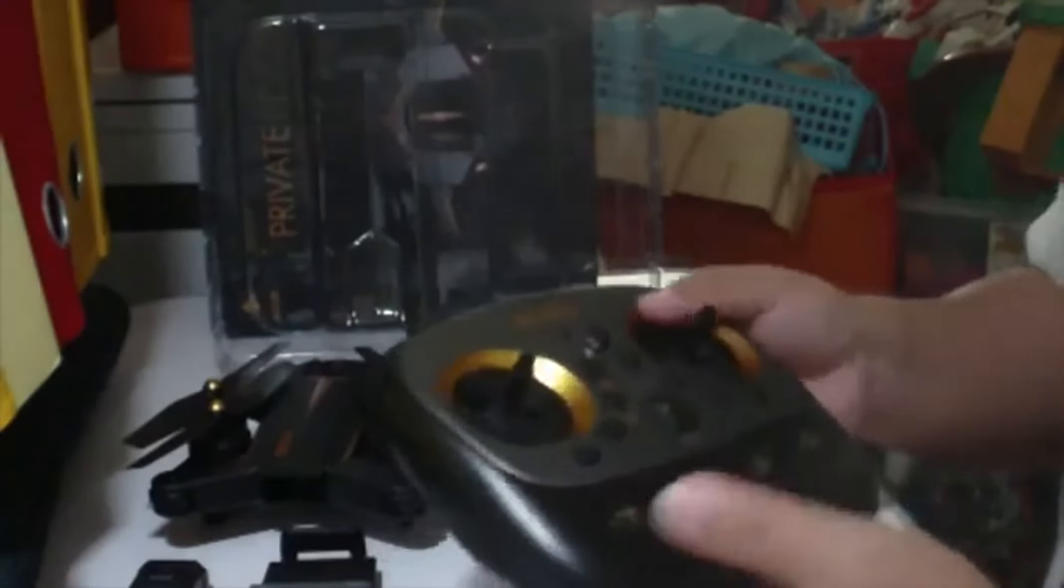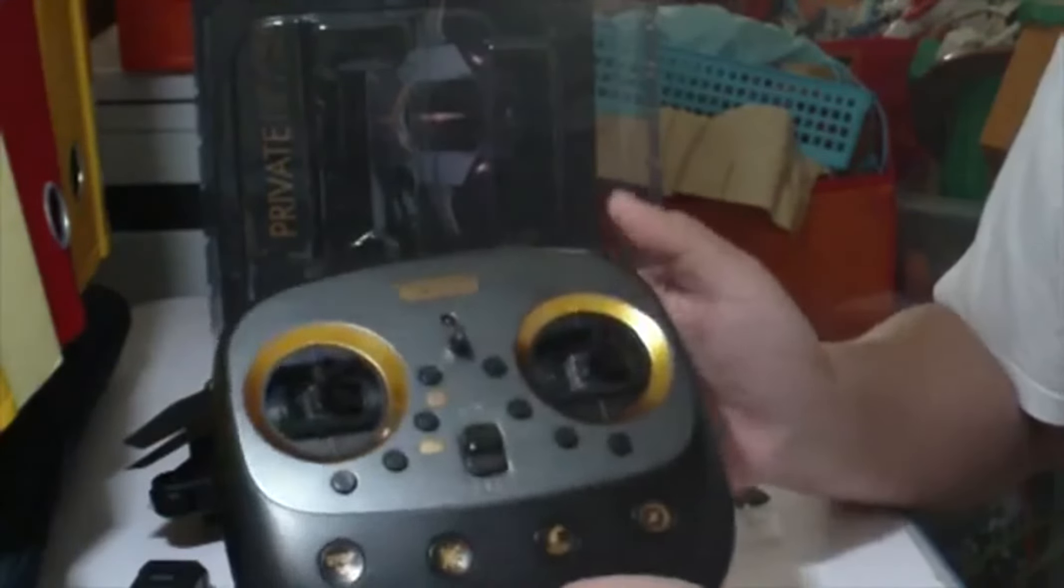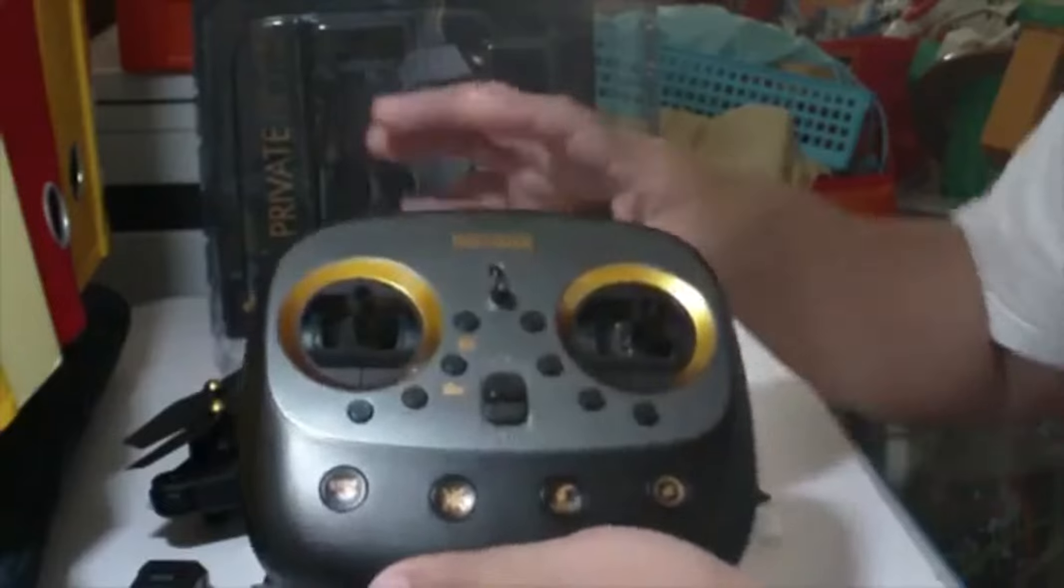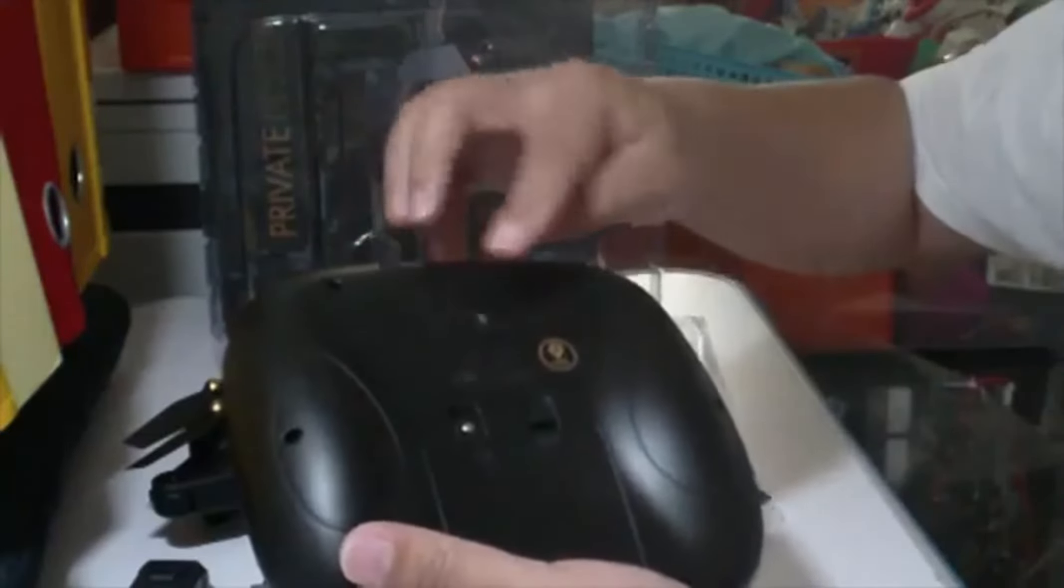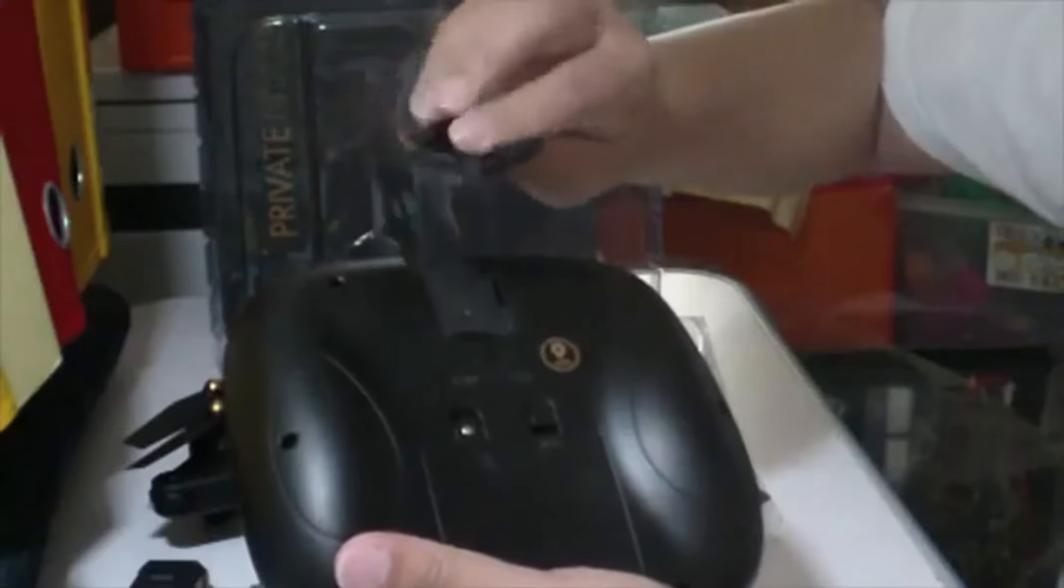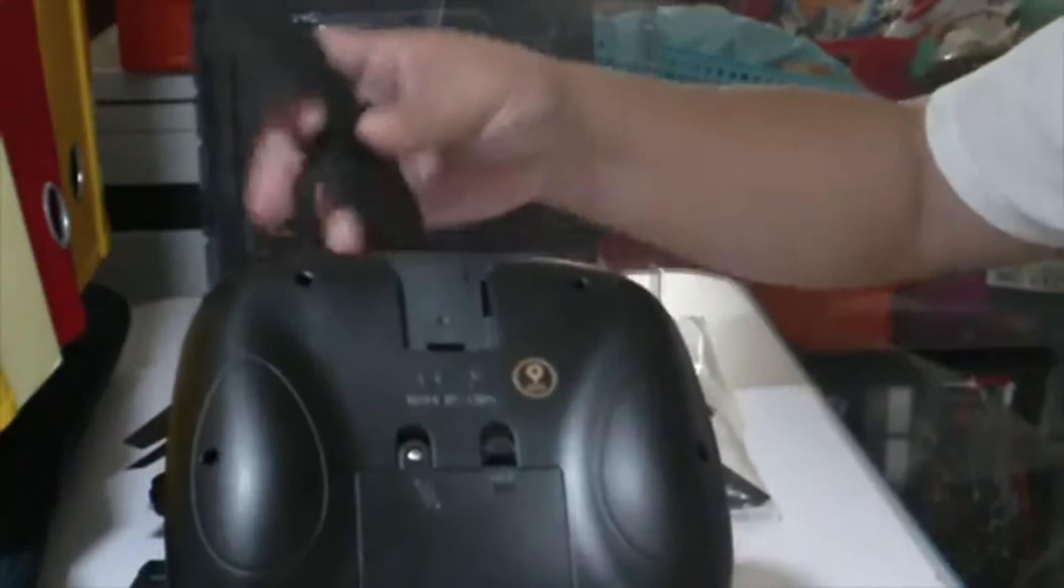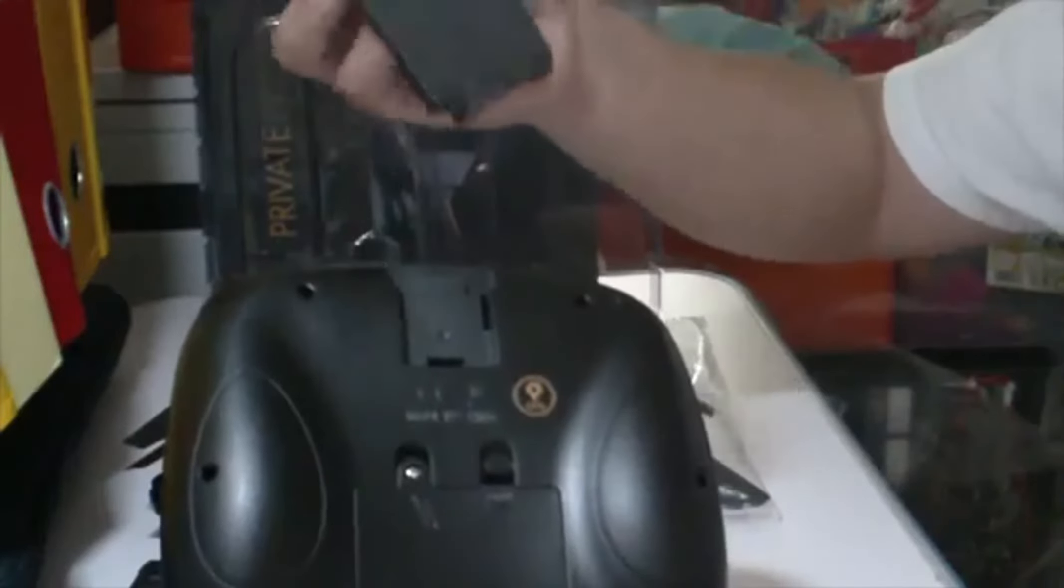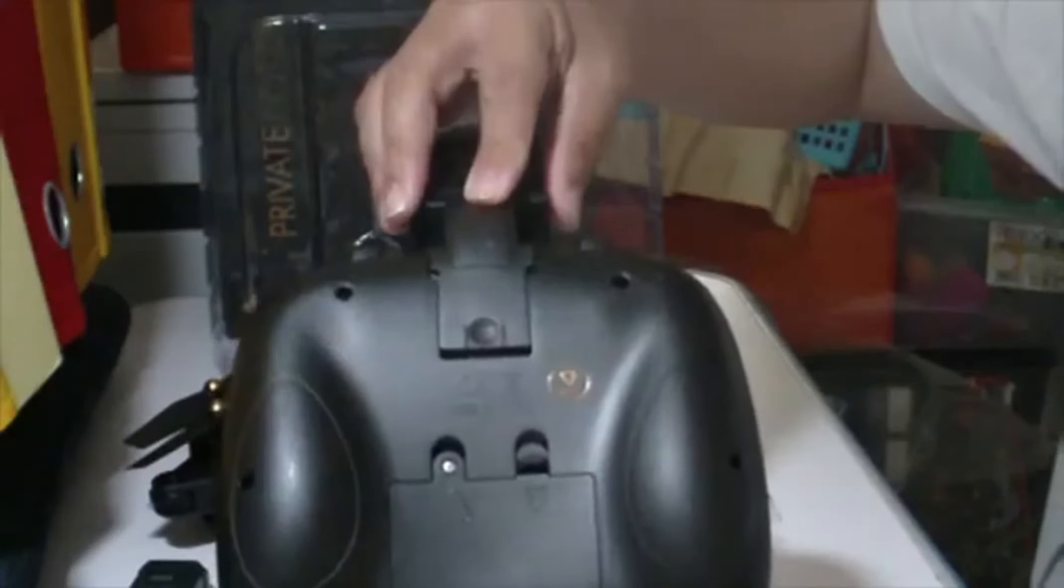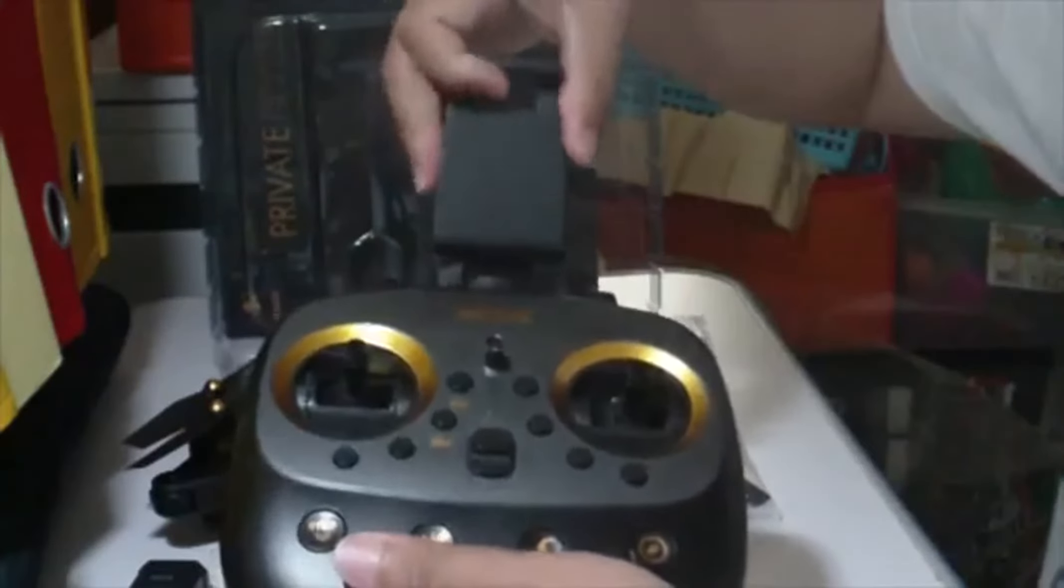As you can see from the remote controller, there is a cover which you have to remove. That's where you put in and clip on your mobile phone. That's where your mobile phone goes.